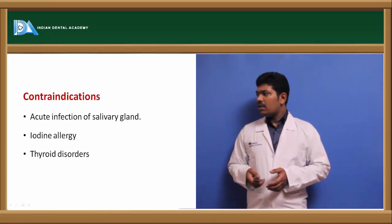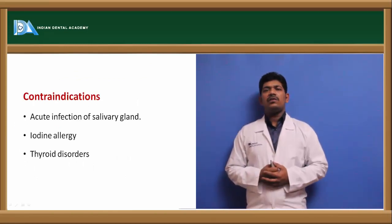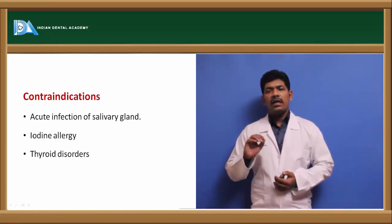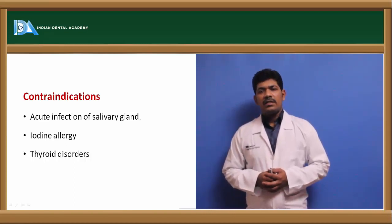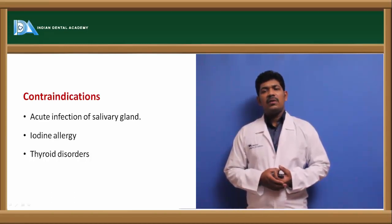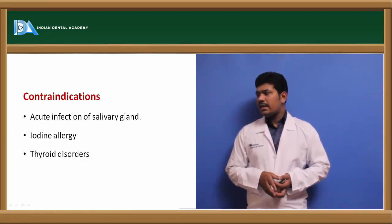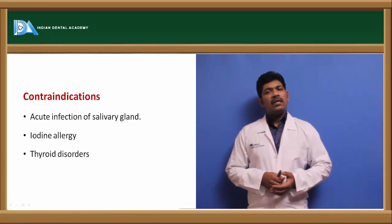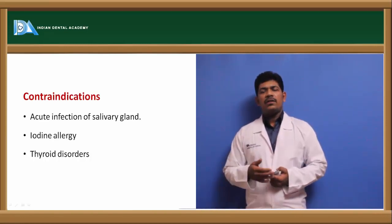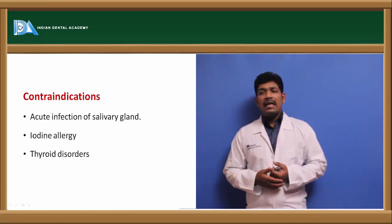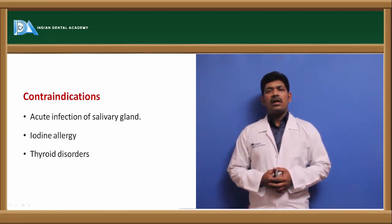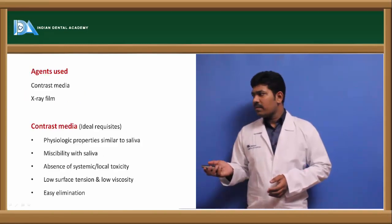Contraindications for sialography include allergies to iodine, since a soluble iodine isotope is used as contrast media and taken up by the salivary glands. It is also contraindicated in acute infections, where the disturbance of salivary gland structure or function could result in a misleading picture and may aggravate the acute infection. Additionally, it is contraindicated in thyroid disorders because an iodine radioisotope is used.